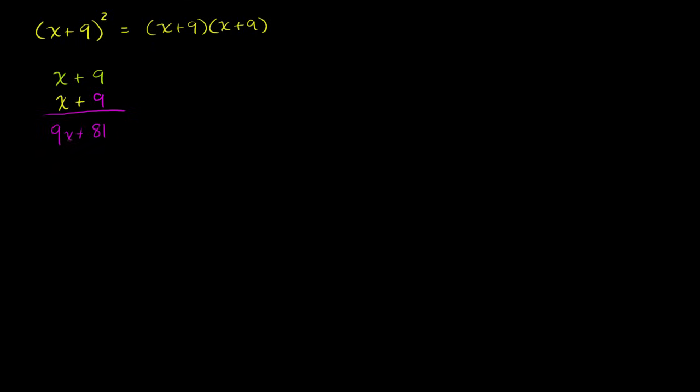Then we have, switch to this x term. We have a yellow x. x times 9 is 9x. Put it in the first degree space. x times x is x squared. And then we add everything up. And we get x squared plus 18x plus 81.